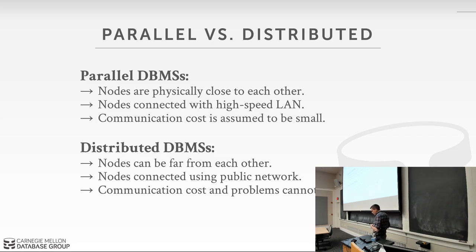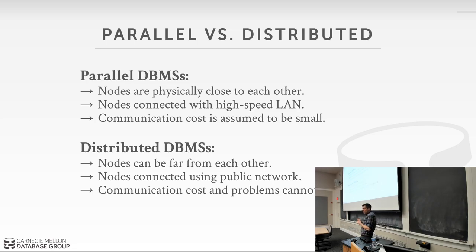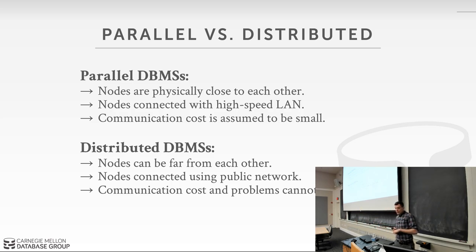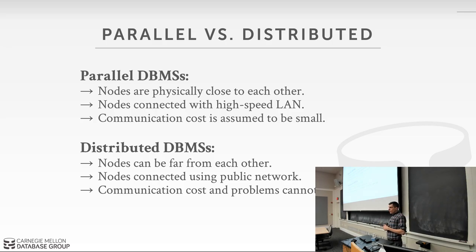A distributed database is typically one where the nodes are far away from each other — in the same data center, across town, or in different geographical regions. In these environments you're typically connecting over a public network, and even inside Amazon's data center it's still not the same as two sockets in the same box. In a distributed database we can't ignore communication costs or assume communication is reliable. This changes how you set up algorithms because you can't assume a message arrives in the order you expect. For today's class, we're focused on parallel databases — the question is how can we take advantage of additional resources to execute queries more efficiently.